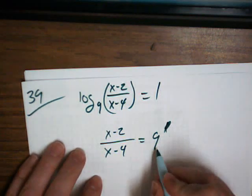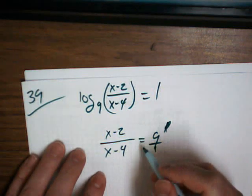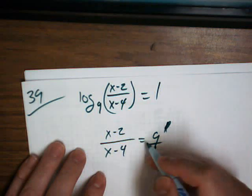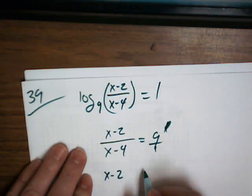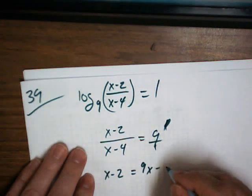Now what I'm going to do is treat this like a proportion: 9 over 1. I'm going to cross multiply now. So x minus 2 times 1 equals 9 times (x minus 4), which would be 9x minus 36.